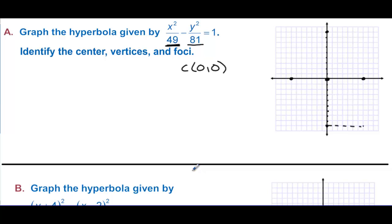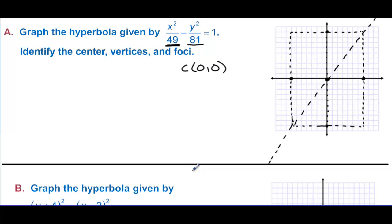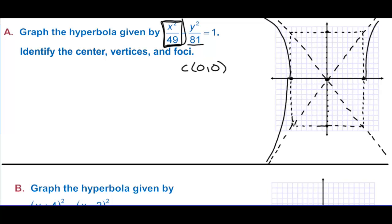We create a rectangle through these four points, and from that rectangle we can draw the asymptotes through the corners. The asymptotes are drawn as dotted lines, and the hyperbola follows them.